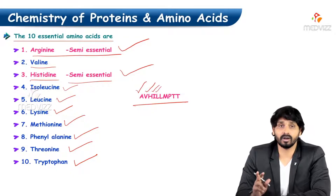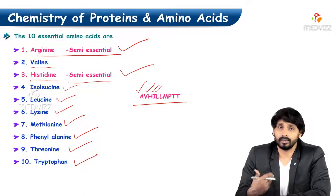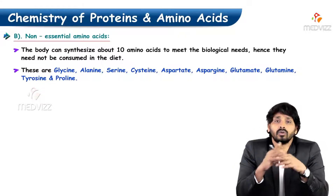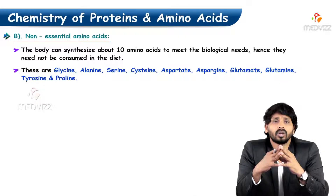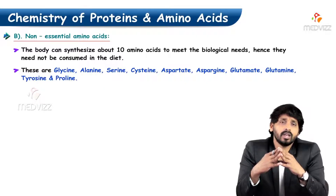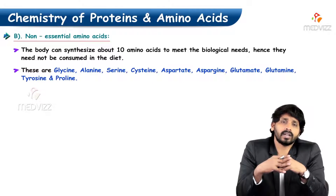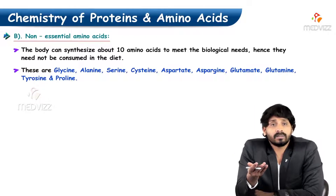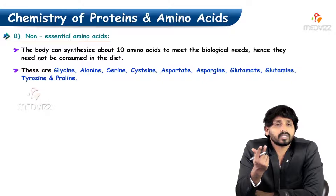This is very important to remember, as exams may ask MCQs or viva questions on this. Regarding semi-essential amino acids: up to a certain age we require them in the diet, but once you reach the adult stage, it is no problem whether you take them or not. There are two semi-essential amino acids — histidine and arginine.